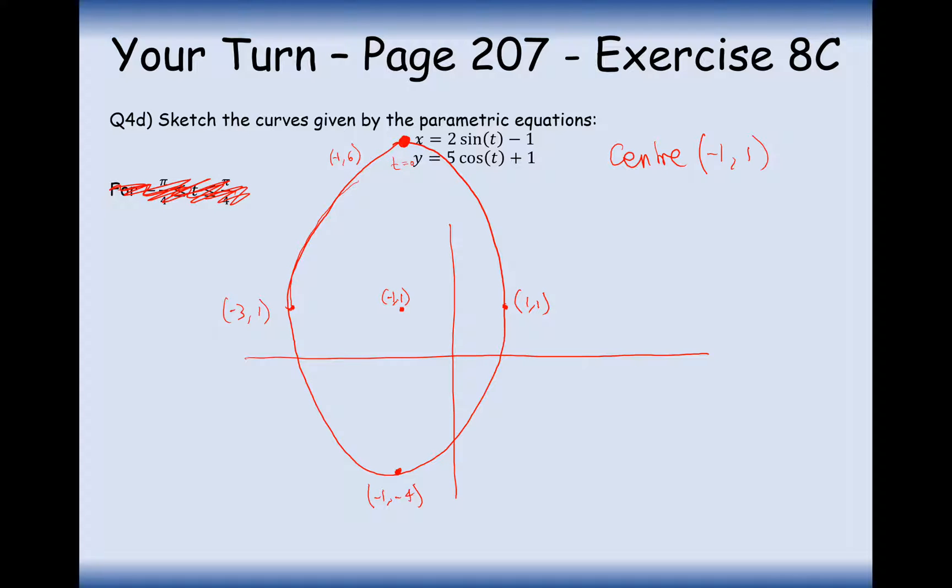And then as we move around the circle, this goes to t equals π by 2. This will move around from here to here. So this will now equal t equals π.